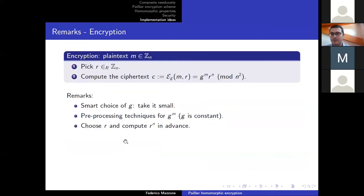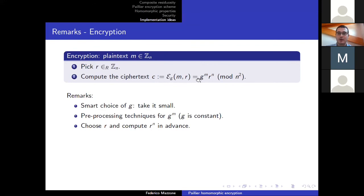If we still have enough time, I would like to share some implementation ideas that can speed up a possible implementation of the Paillier system. For the encryption function — which takes the plaintext and computes G to the power of the plaintext times a random quantity to the power of N — we can make G small to speed up this expensive computation. We can also apply pre-processing techniques: store some powers of G — G to the power of two, four, and so on — and then assemble them to get G to the desired power. Furthermore, if this cipher is inside an application context, there will be times when one of the actors is idle. The encryptor can use these idle times to pre-compute random quantities and R to the power of N in advance, so that when encryption is needed, this quantity is already computed.